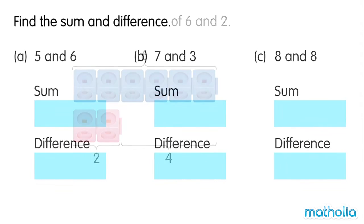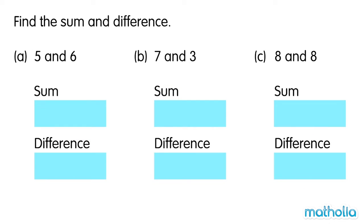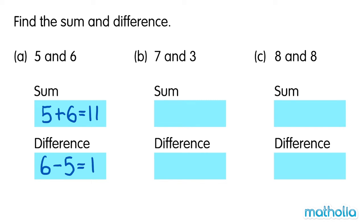Find the sum and difference. 5 plus 6 equals 11. The sum is 11. 6 minus 5 equals 1. The difference is 1.